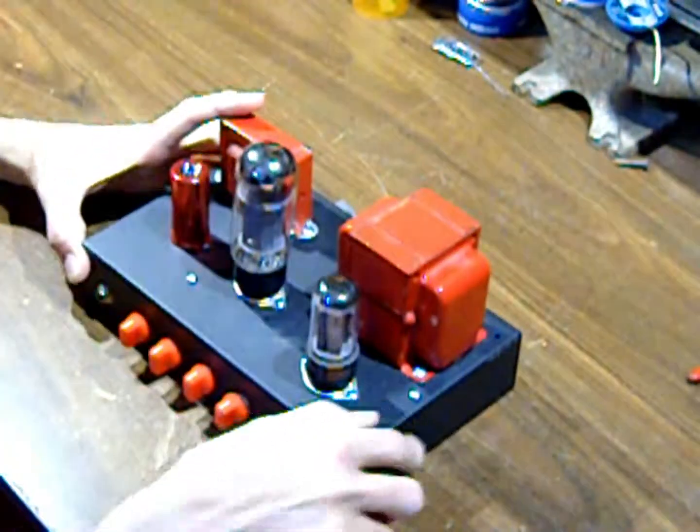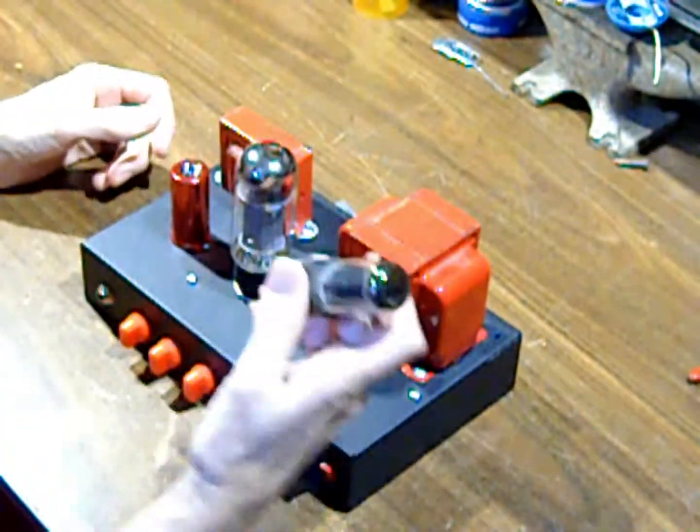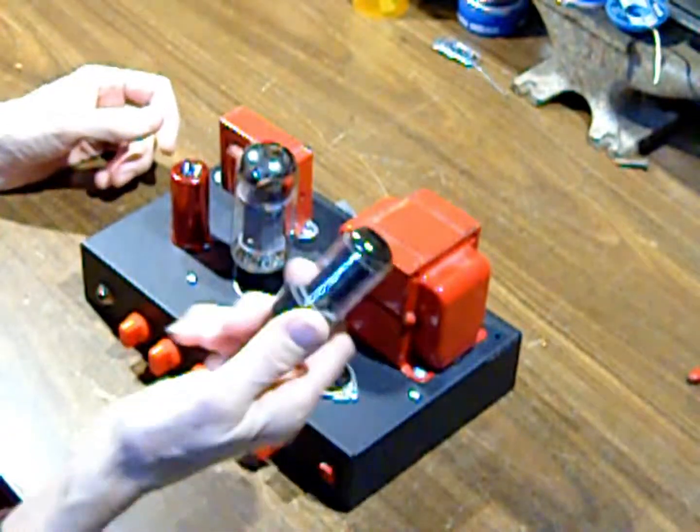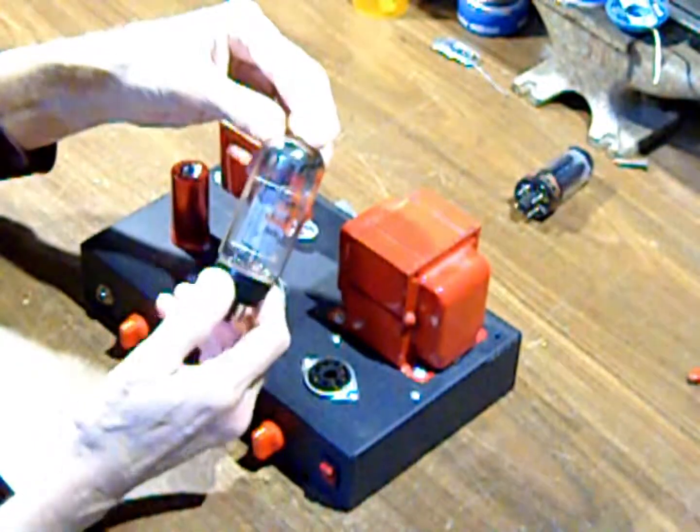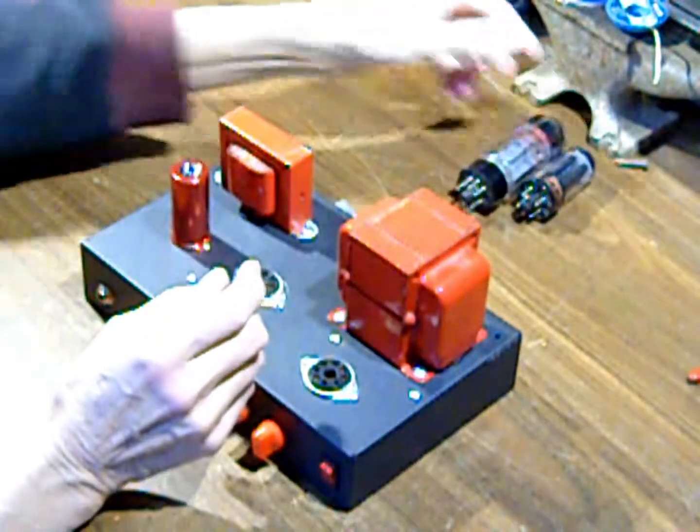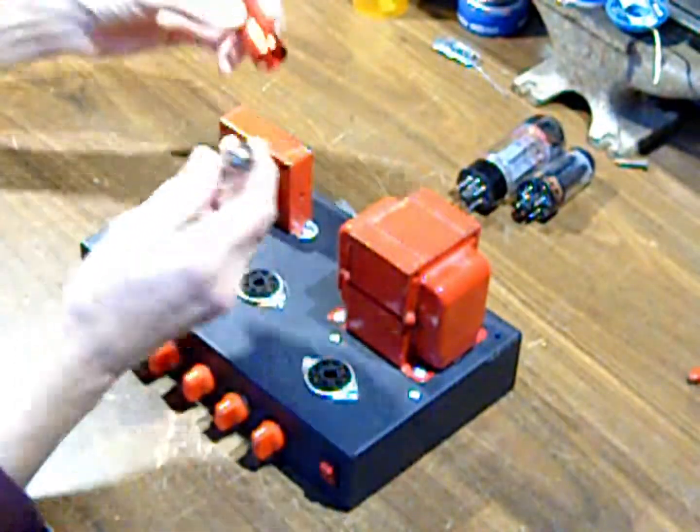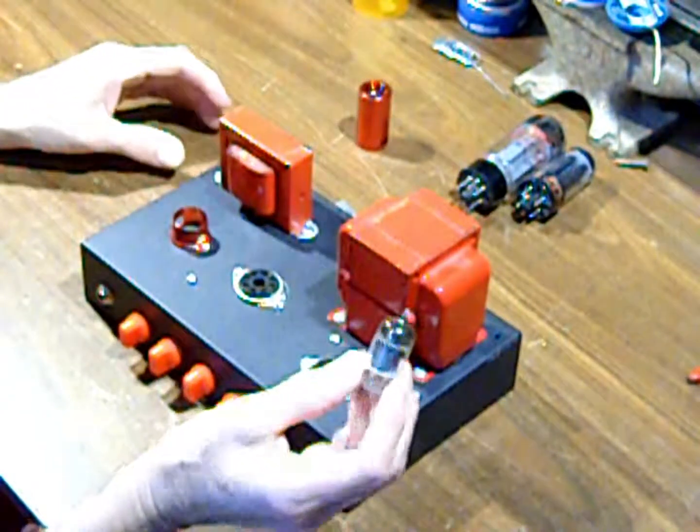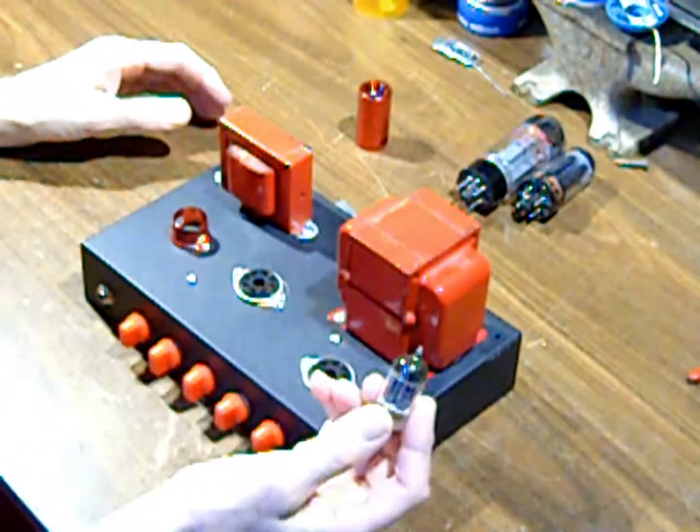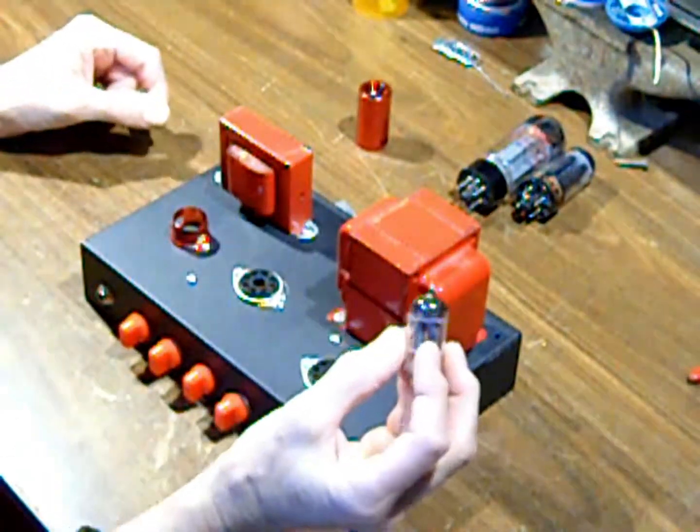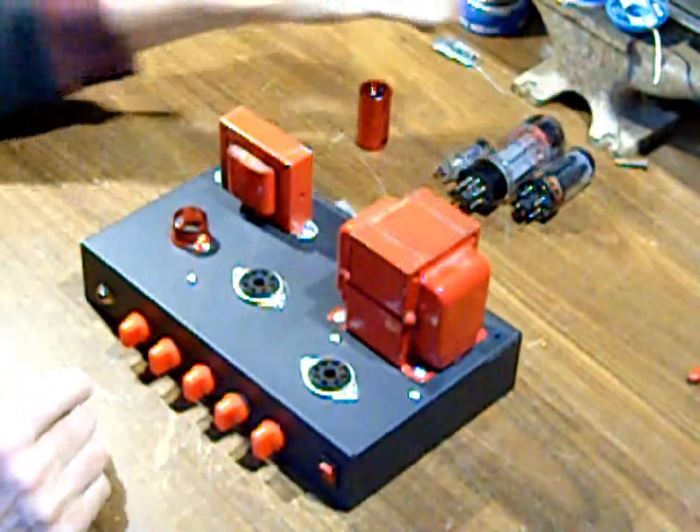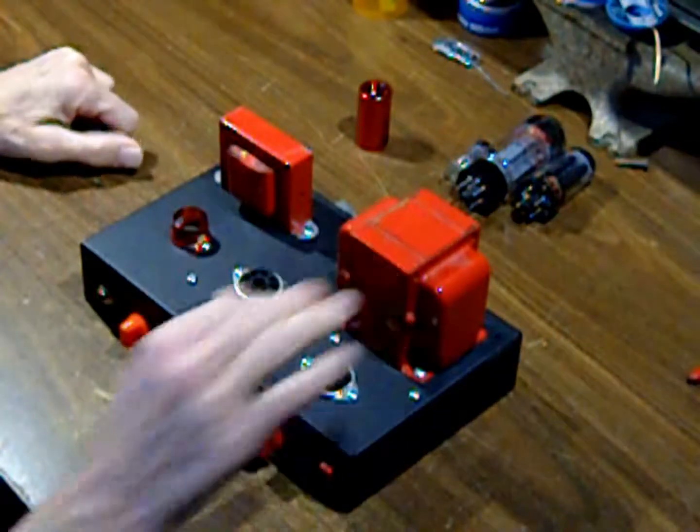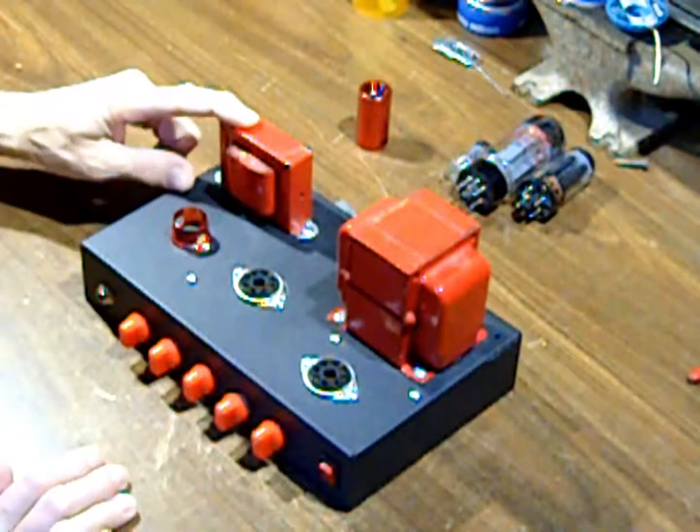Now like I said, this is the rectifier tube for the power supply. This is the output power tube. And this is the entire preamp section. It's one tube. It has two triodes built into the tube. And that's all it takes to run this little amp. This is the power supply transformer. This is the output transformer.